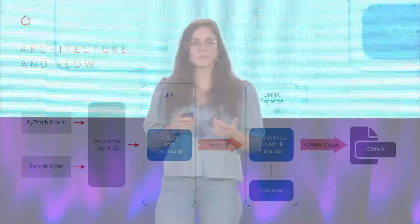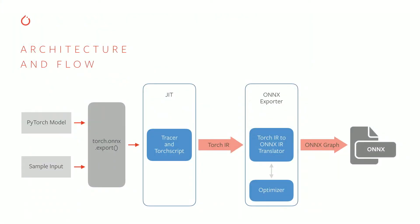Let's look into where the ONNX exporter fits within the PyTorch codebase. The ONNX exporter provides a simple API that requires the trained model and the sample input. The export consists of two main steps.